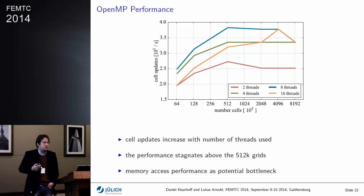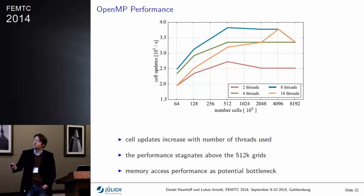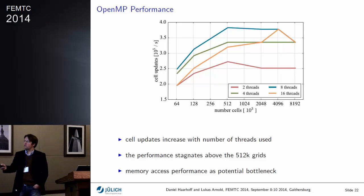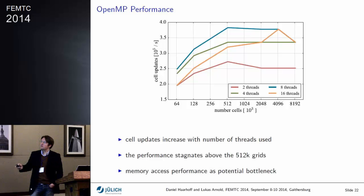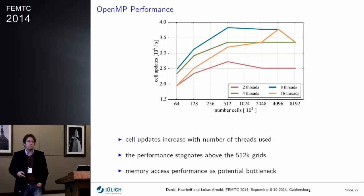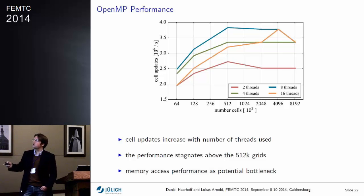Another way of looking at performance is the number of cell updates per second. This graph shows cell updates per second as a function of grid size (number of cells) for different thread counts. In general these numbers rise, but then plateau at a certain point — showing that you hit the memory bandwidth barrier, meaning memory isn't transferred fast enough to the CPU for these numbers to increase any further.